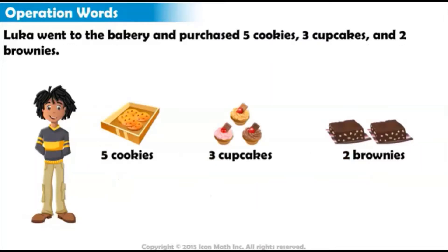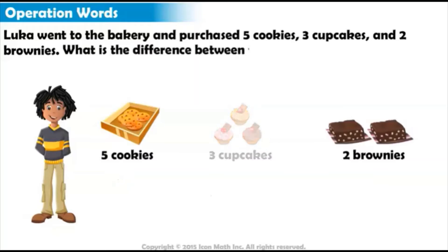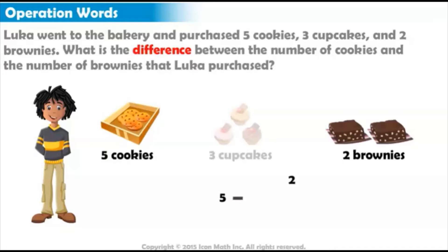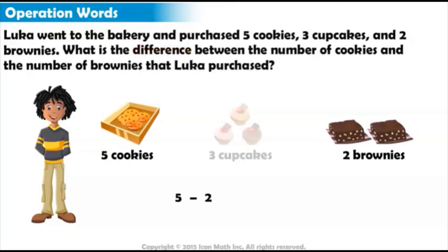Suppose the question was: what is the difference between the number of cookies and the number of brownies that Luca purchased? Do you see the clue word? The clue word here is 'difference.' We must find the difference between the number of cookies and brownies, which means we must subtract 5 minus 2. So he bought three more cookies than brownies.